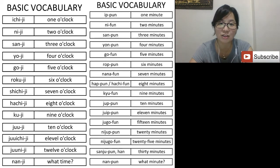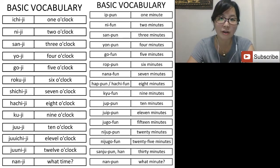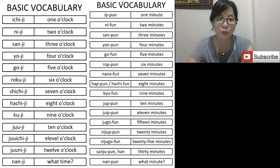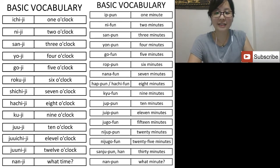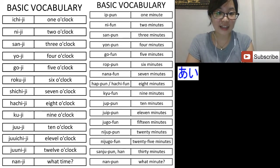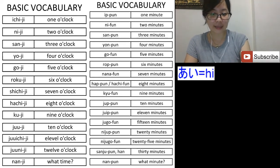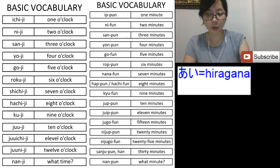Hello, today I would like to talk about numbers in Japanese. Before going to the grammar, I would like to explain about the writing in Japanese. Japanese has three different types of writing system. For example, this one — we pronounce it 'a' — this one is what we call hiragana. This one is also 'i' — this type of writing we call katakana.